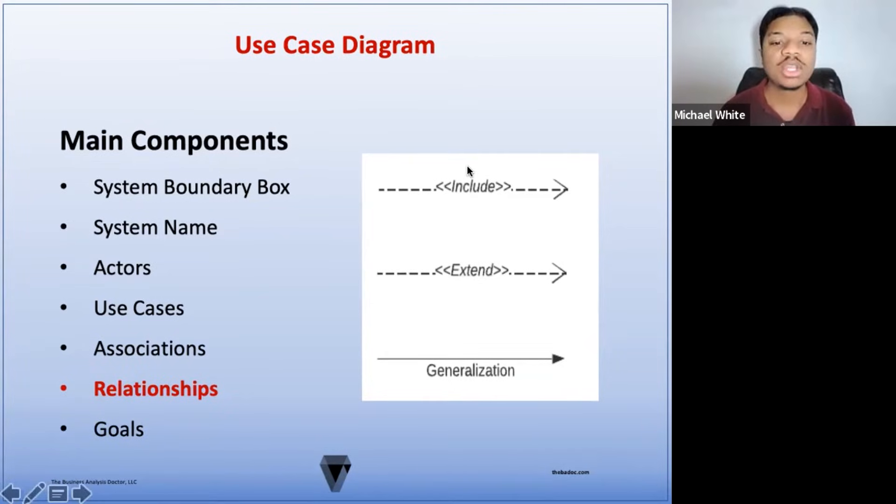The include relationship is any functionality that is shared between one or more use cases. The include use case is a required function and must be completed in order for the base use case to be successfully executed. Include relationships are represented with dashed lines with an arrow pointing from the base use case toward the included use case.